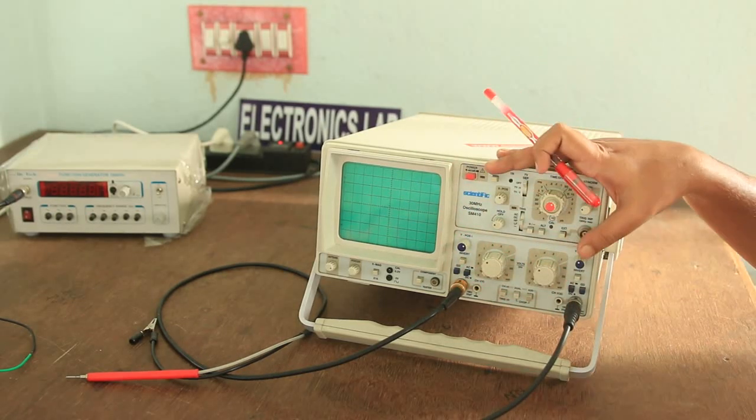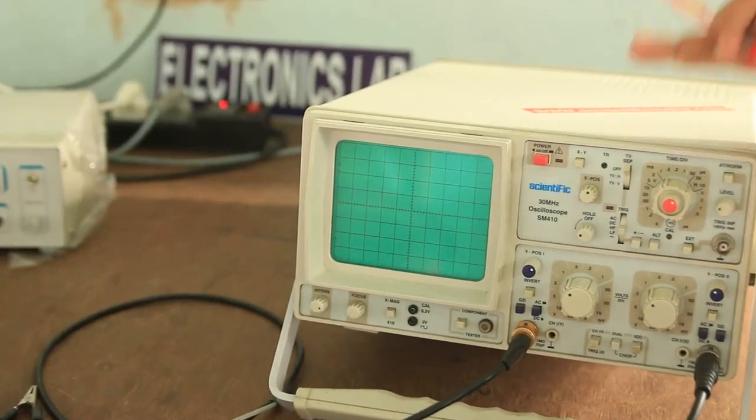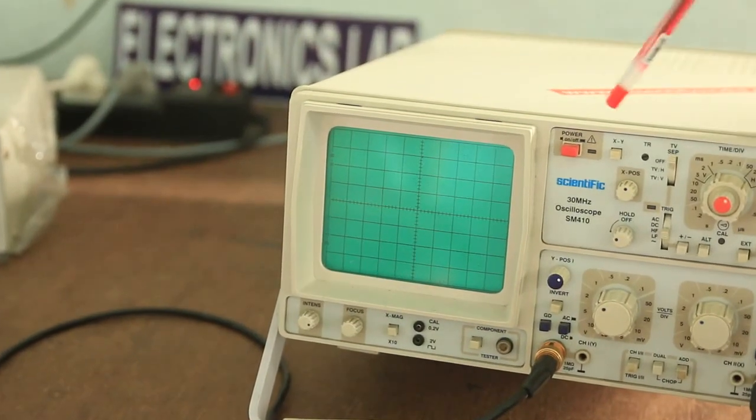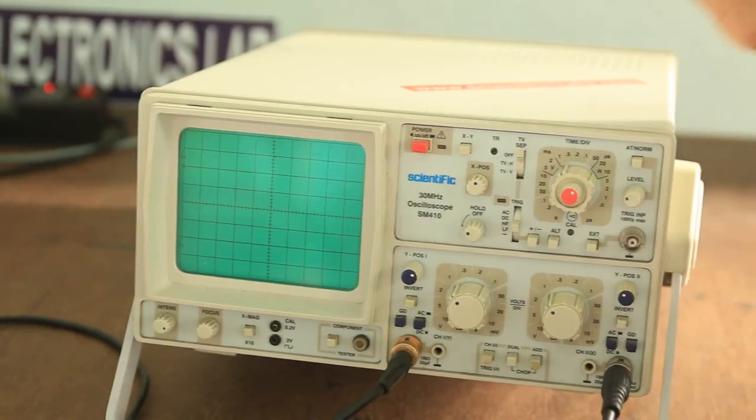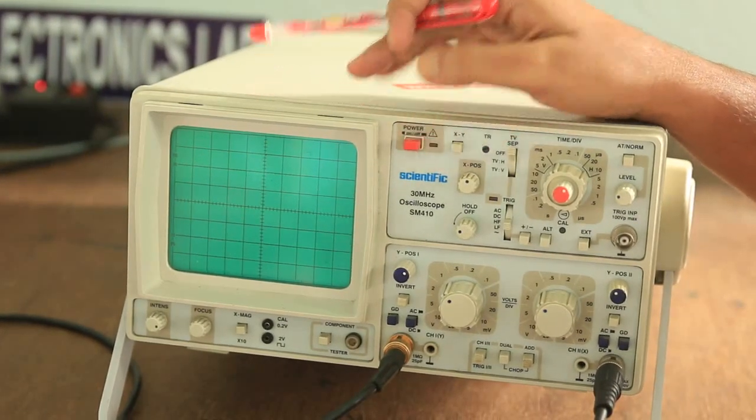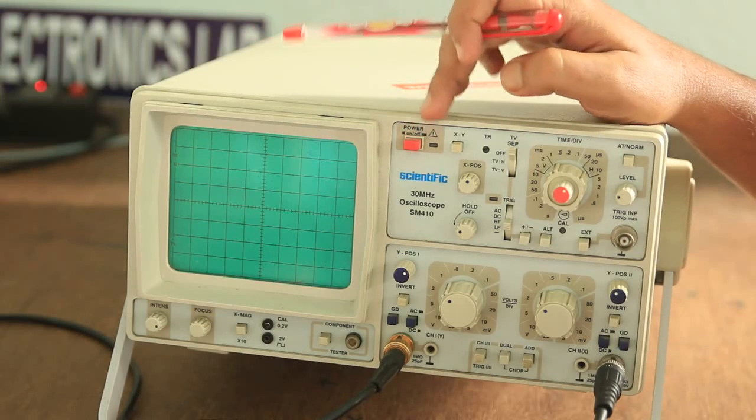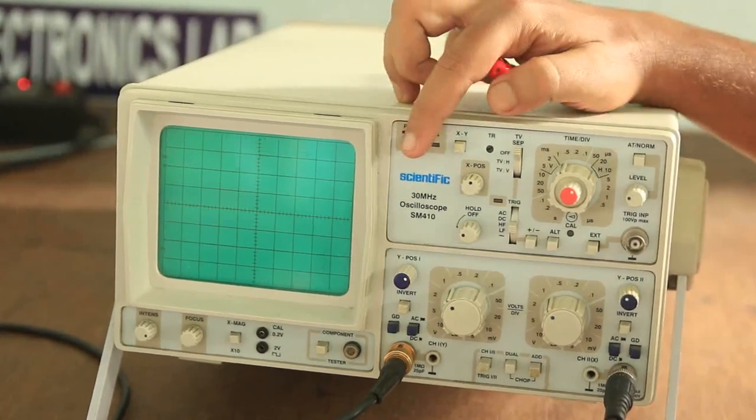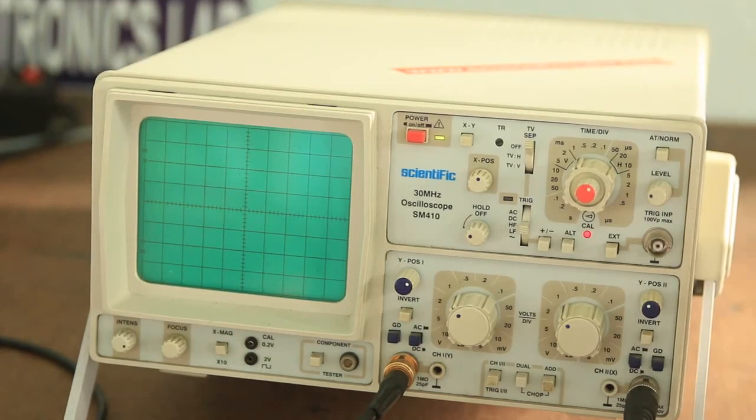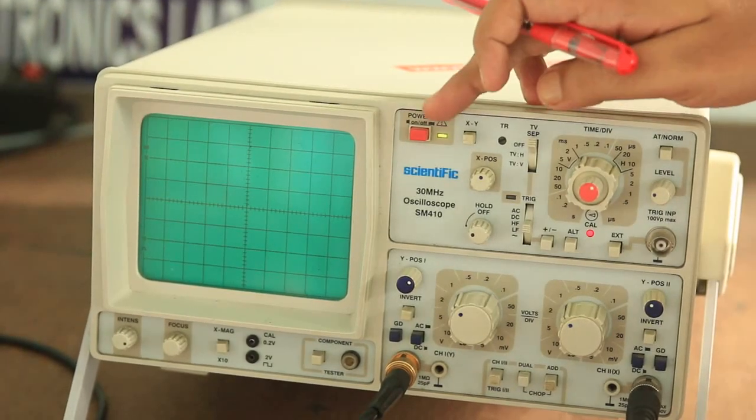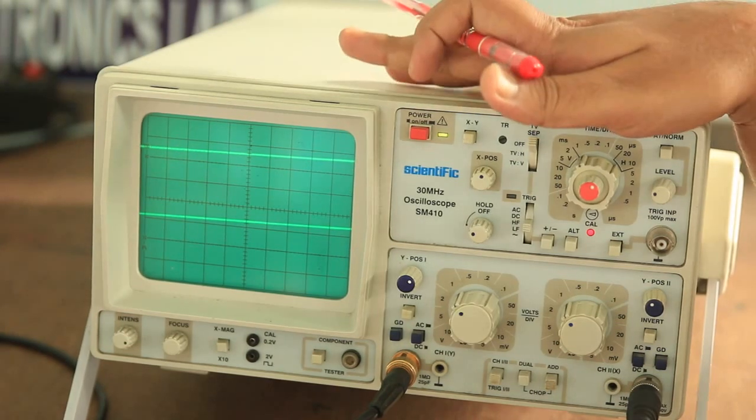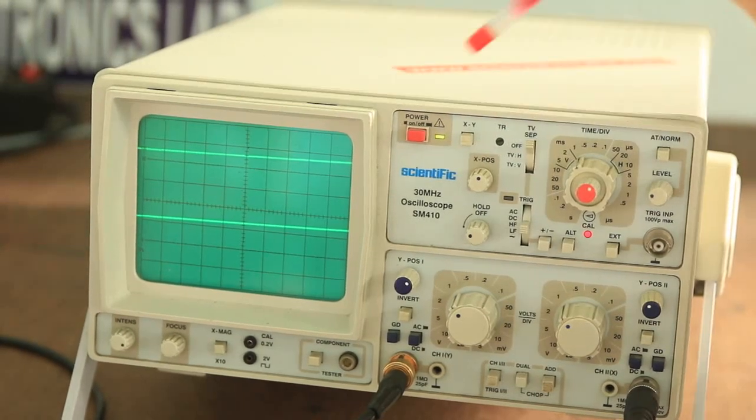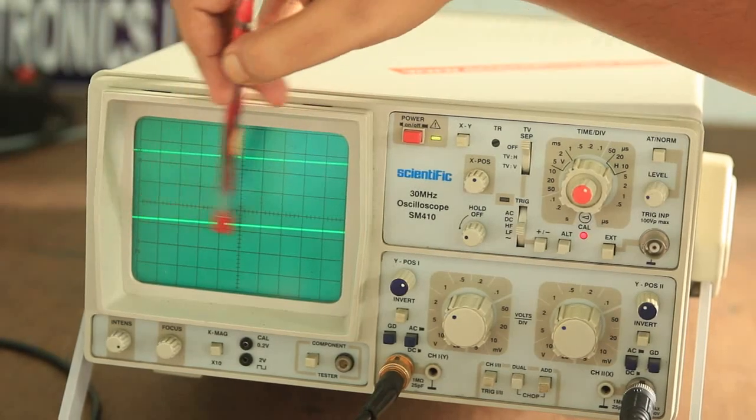We will now concentrate on the knobs of the CRO. First of all, this red knob is the power knob of a CRO. As you can see, if I press it, the main switch is already given, so if I press it, it makes the circuit on and you can see two green lines, continuous lines on the screen.